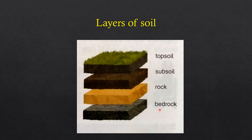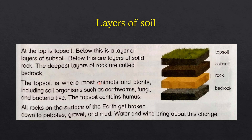There are the sub-soils, the rock, and the bedrock — let's see them in detail. At the top is topsoil. Below topsoil is a layer of sub-soil. The deepest layers of rock are called bedrock. The topsoil is where most animals and plants, including soil organisms such as earthworms, fungi, and bacteria, live.